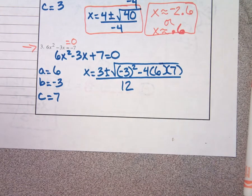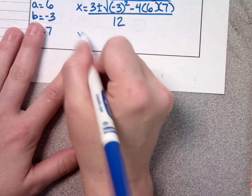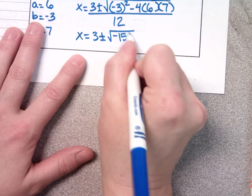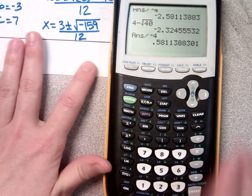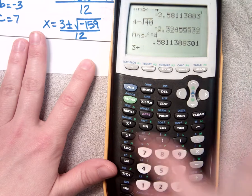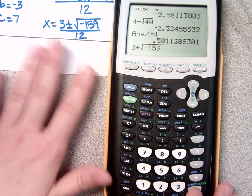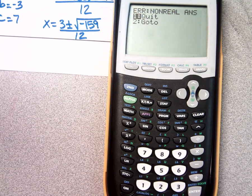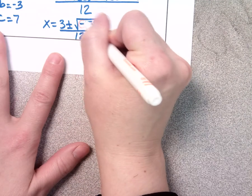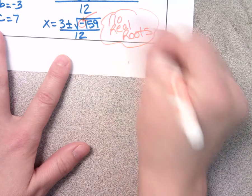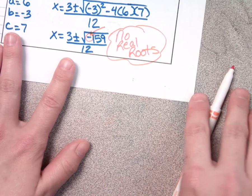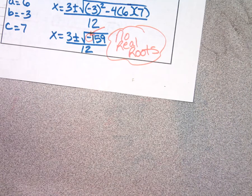What did you get? Negative 159. So it goes 3 plus or minus square root of negative 159, all over 12. As of right now, you cannot have negatives under square roots. In Algebra 2 you'll learn how to deal with that — it involves the imaginary number system. So if you ever see a negative underneath the square root, we write: no real roots.